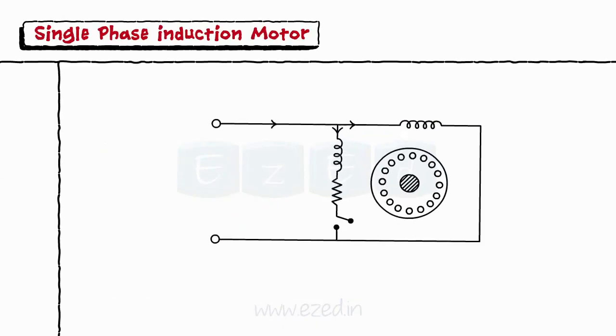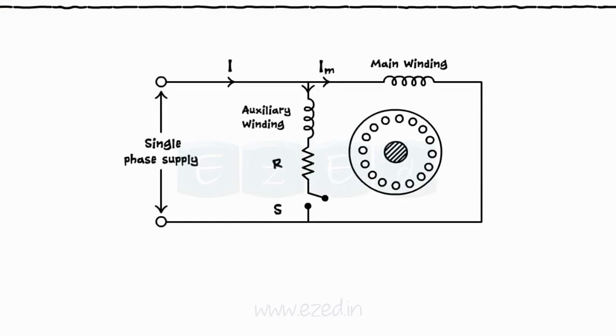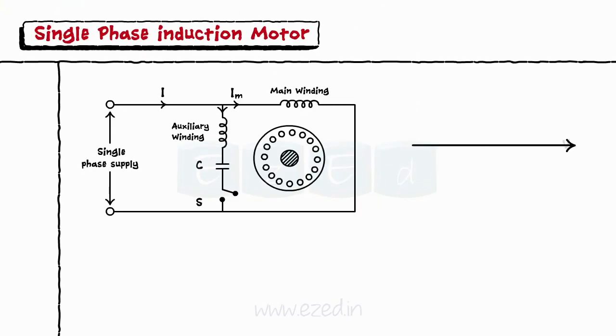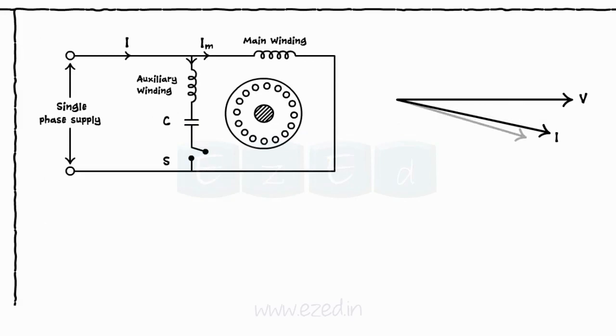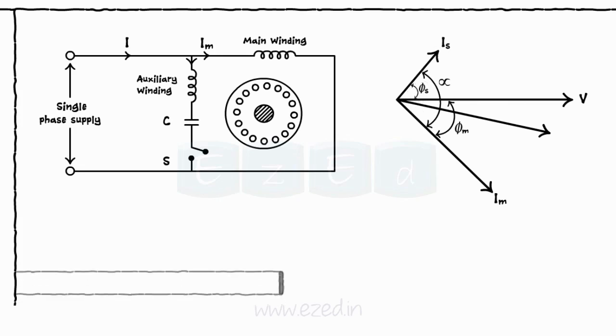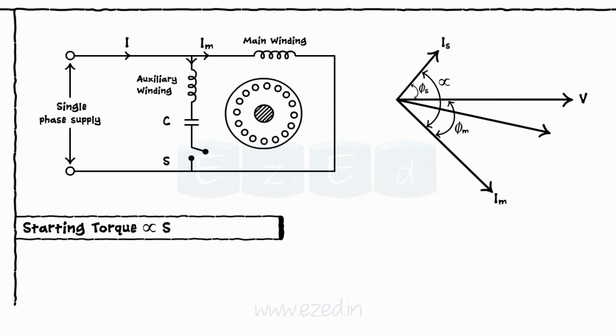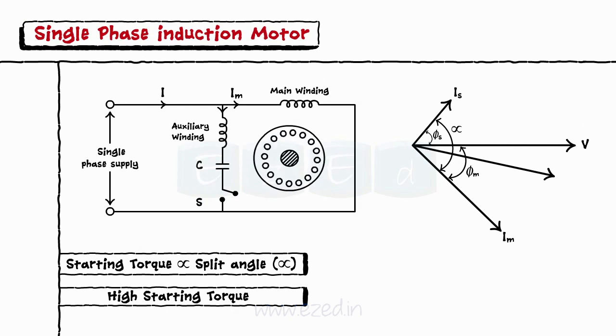The construction of capacitor start motor is very similar to split phase motor. Only difference is the capacitor is used instead of a resistor in series with the auxiliary winding. The capacitor draws the current such that the current leads the voltage. Thus, in the motor, the current IM still lags the voltage but the current IS leads the voltage. This increases the split angle between the two currents. As the starting torque is proportional to this split angle, such motors produce high starting torque and motor starts its rotation.